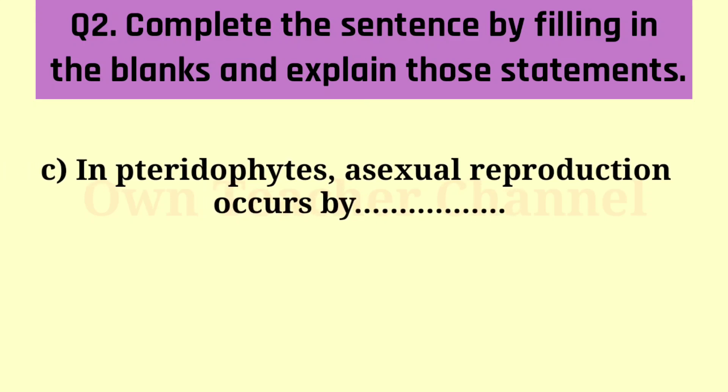(C) In pteridophytes, asexual reproduction occurs by spores. Pteridophytes reproduce by spores which are formed along the posterior or back surface of the leaves. Pteridophytes do not bear flowers and fruits.